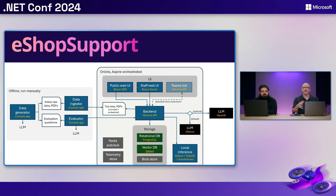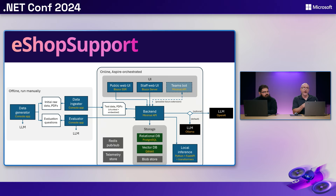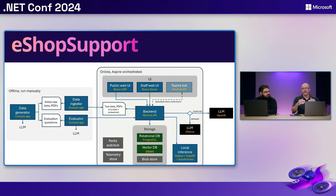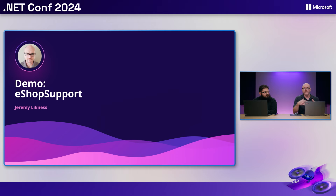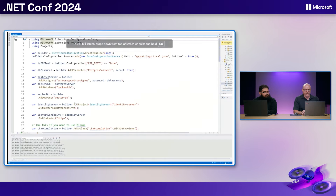Before that, I want to address something probably on everyone's mind: our system is web-based and much larger than what we just talked about — how does a system with so many moving pieces work in the intelligent apps arena? This is why we built the eShop Support demo project, a large-scale microservices-based project built on .NET Aspire that includes the ability to swap between a local model like Llama for developers and a cloud-based model like OpenAI.